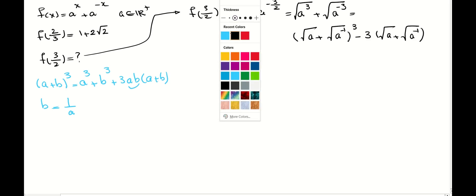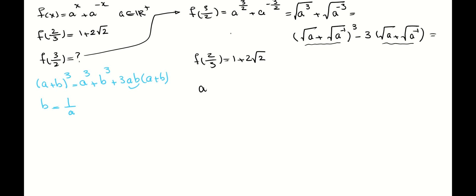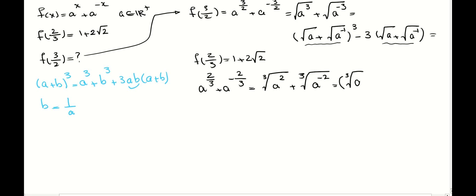Now let's continue. Based on what we have, f(3/2) depends on (√a + (√a)^(−1)), so that is what we need to find. Let's see how we can determine that from f(2/3). f(2/3) is defined as 1 + 2√2, and f(2/3) equals a^(2/3) + a^(−2/3), which is the cube root of a² plus the cube root of a^(−2).